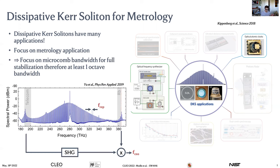For both applications, what is needed is to fully stabilize your frequency comb. Your frequency comb has mostly two degrees of freedom: the repetition rate — the frequency spacing between two teeth — and the carrier envelope offset frequency, which is the zero-frequency shift of the comb.